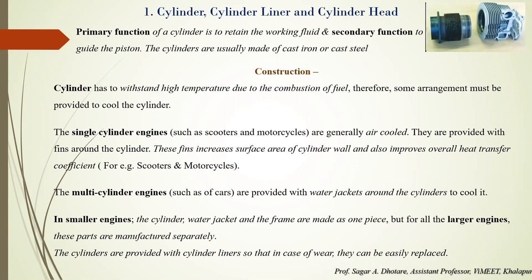In multi-cylinder engines, a water jacket is provided around the cylinder for cooling. In smaller engines, the cylinder, water jacket, and frame are made as a single piece, but in larger engines these parts are manufactured separately. Cylinders are provided with cylinder liners so that in the case of wear, only the liner needs to be replaced rather than the whole cylinder assembly.